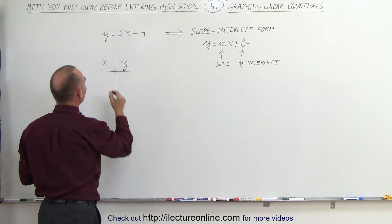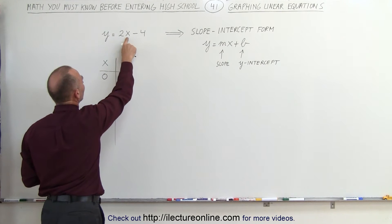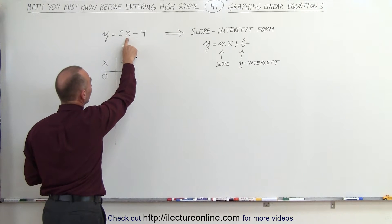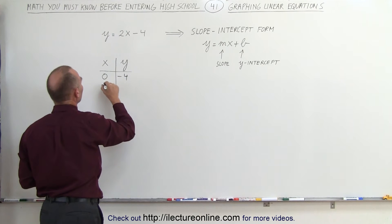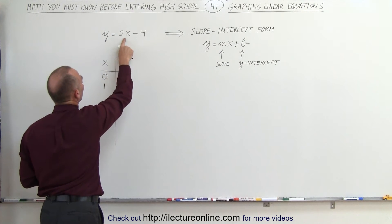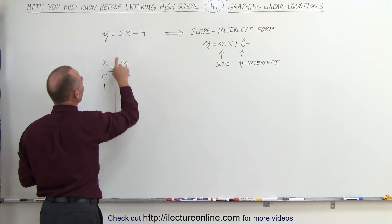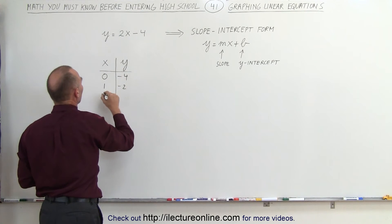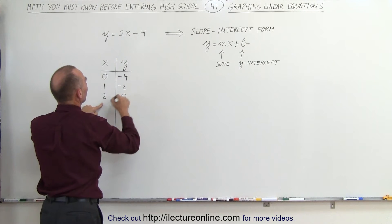First, let's say what happens when x is equal to 0. When I put a 0 in there, 2 times 0 which is 0 minus 4 gives me minus 4 for y. When I plug in the number 1, 2 times 1 which is 2 minus 4 gives me minus 2. When I plug in 2 for the value for x, 2 times 2 is 4 minus 4 gives me 0 for y.